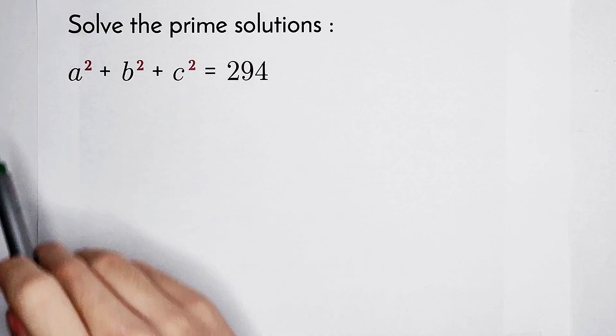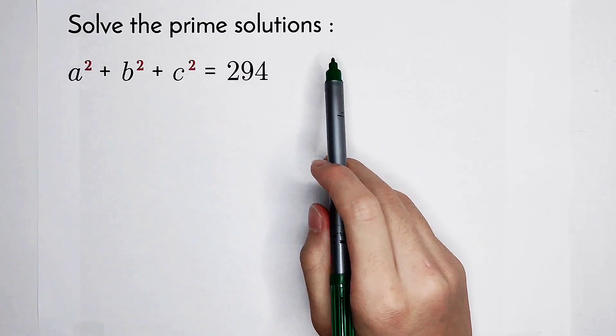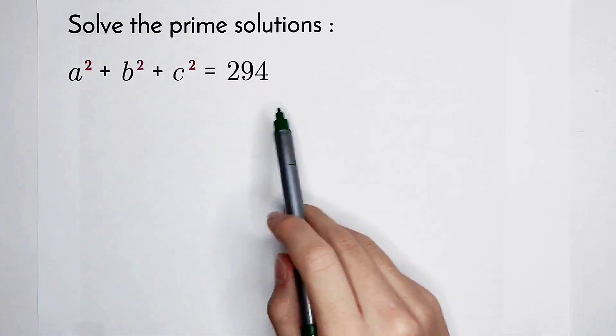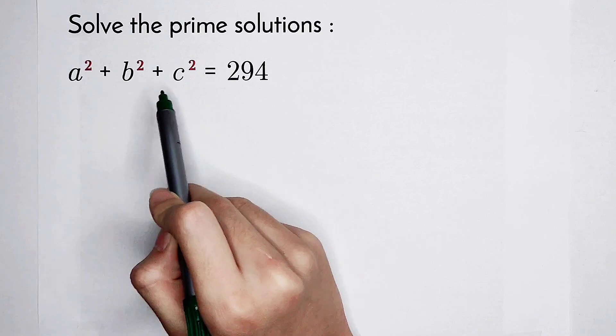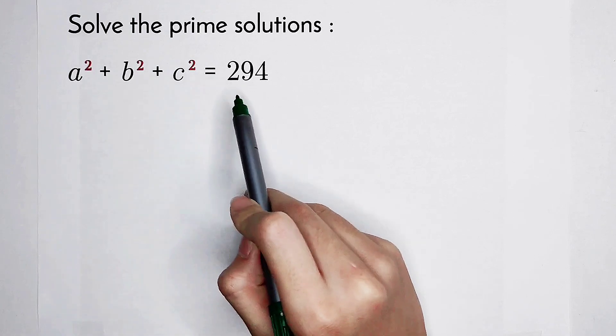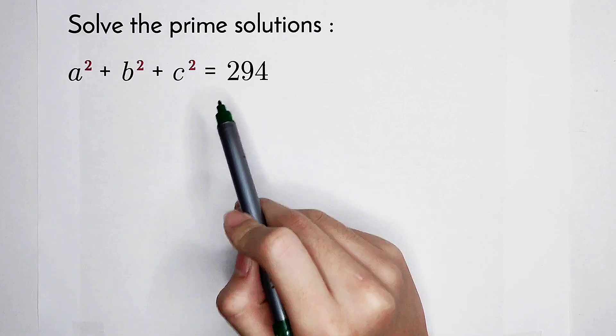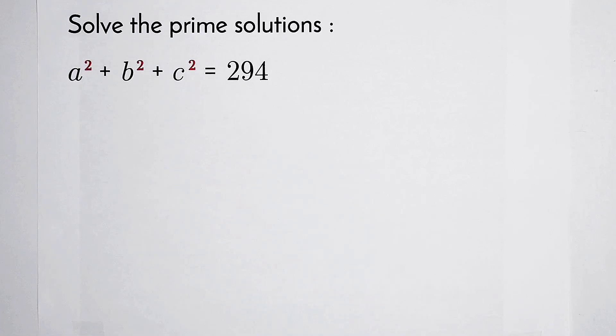Welcome to Math We Know. Solve the prime solutions of this equation: a squared plus b squared plus c squared is equal to 294. How should we solve it?